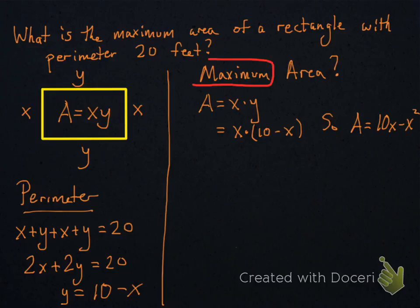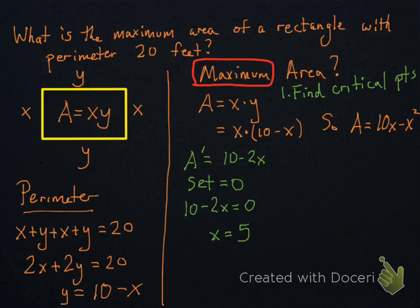Now, this is good, because we're looking to find the maximum. You guys know how to find max and mins. We just did this. Find the critical points. So, you take derivative, set it equal to 0, solve for x. The next thing you do is put that on a number line.